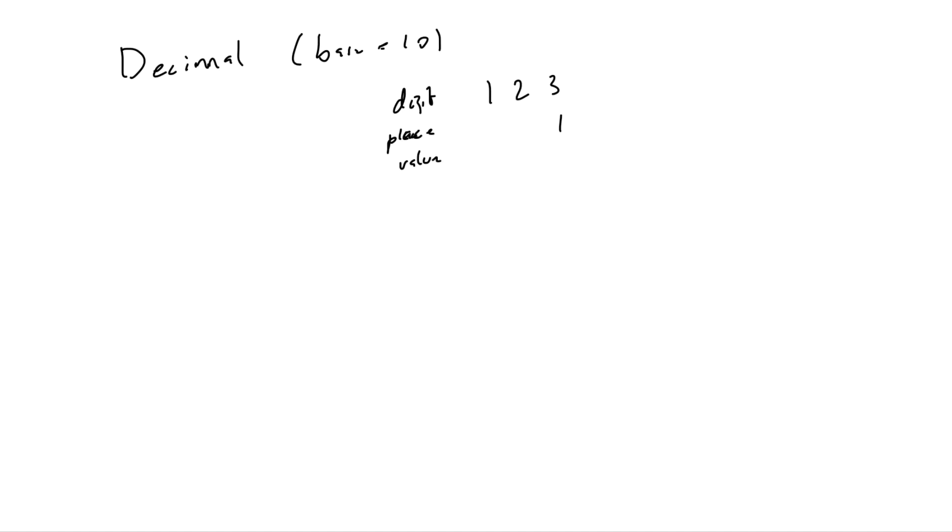So the 3 is in the 1's place, the 2 is in the 10's place, and the 1 is in the 100's place. And so if you want to find the actual value of this number, you can do 1 times 100 plus 2 times 10 plus 3 times 1. That's how you would calculate the actual value. And of course, you'll get 123.